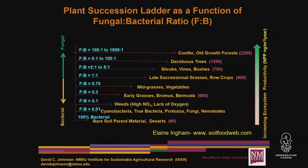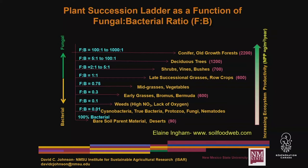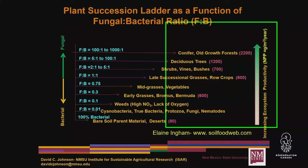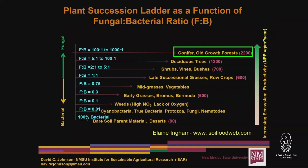There's a ladder of succession that is developed on this planet — from a bare soil parent material to your old growth forest. You can see there's a change from a predominantly bacterial to predominantly fungal community. As you also increase net primary productivity from about 90 grams of dry biomass up to 2,200 grams.